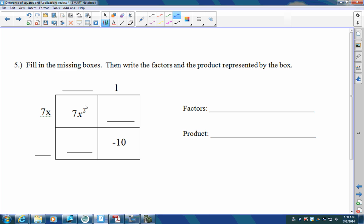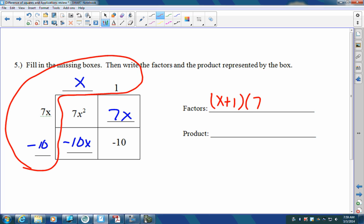All right. 7x squared is 7x times what gives me 7x squared? Just an x. So now 7x times 1, 7x. 1 times what gives me negative 10? Negative 10. x times negative 10, negative 10x. Remember, guys, factors are around the outside. So I have x plus 1 and 7x minus 10. Those are my factors. My products, what's happening inside here? 7x squared. Don't forget to add these bad boys right here. Negative 3x minus 10.